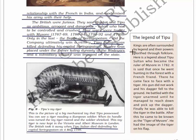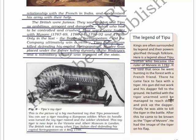Kings are often surrounded by legend and their powers glorified through folklore. Here is a legend about Tipu Sultan, who became the ruler of Mysore in 1782. It is said that once he went hunting in a forest with a French friend, there he came face to face with a tiger. His gun did not work and his dagger fell to the ground. He battled with the tiger unarmed until he managed to pick up the dagger and finally kill the tiger. After this he came to be known as the Tiger of Mysore and had the image of the tiger on his flag.